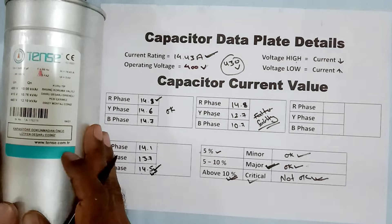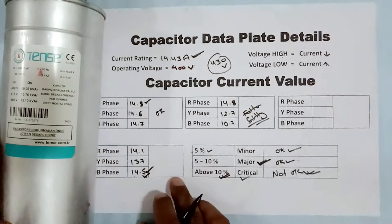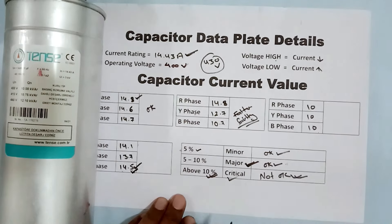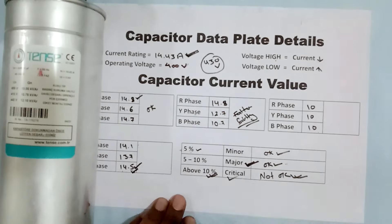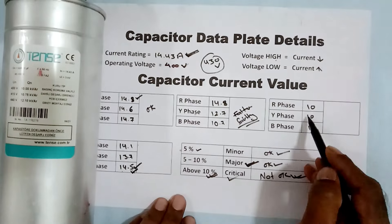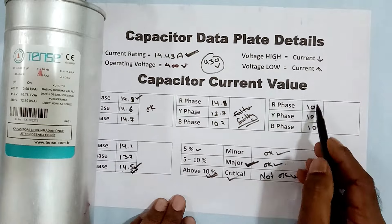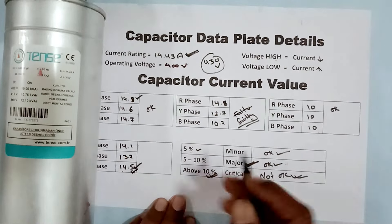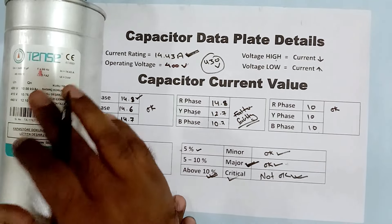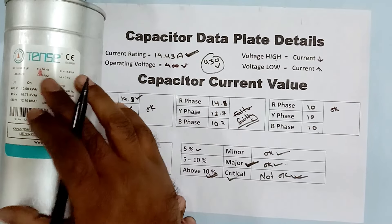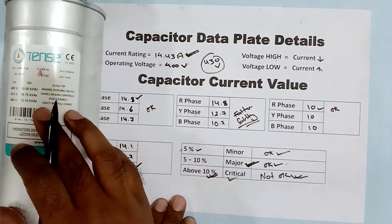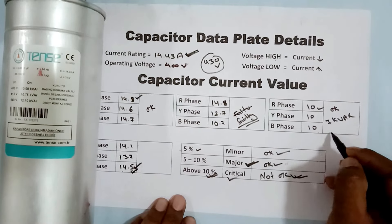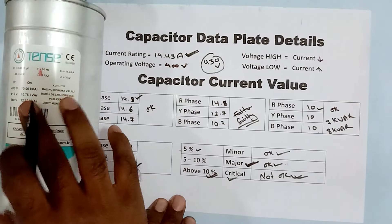There is one more condition to be aware of. Suppose in R phase, Y phase, and B phase, you get 10A current in all three — the current rating is balanced, but it is below the rated current of 14.43A by about 4A. In this condition, the capacitor is structurally okay since the readings are balanced, but the capacitance value will have decreased from 10KVAR to perhaps 7KVAR or 8KVAR.